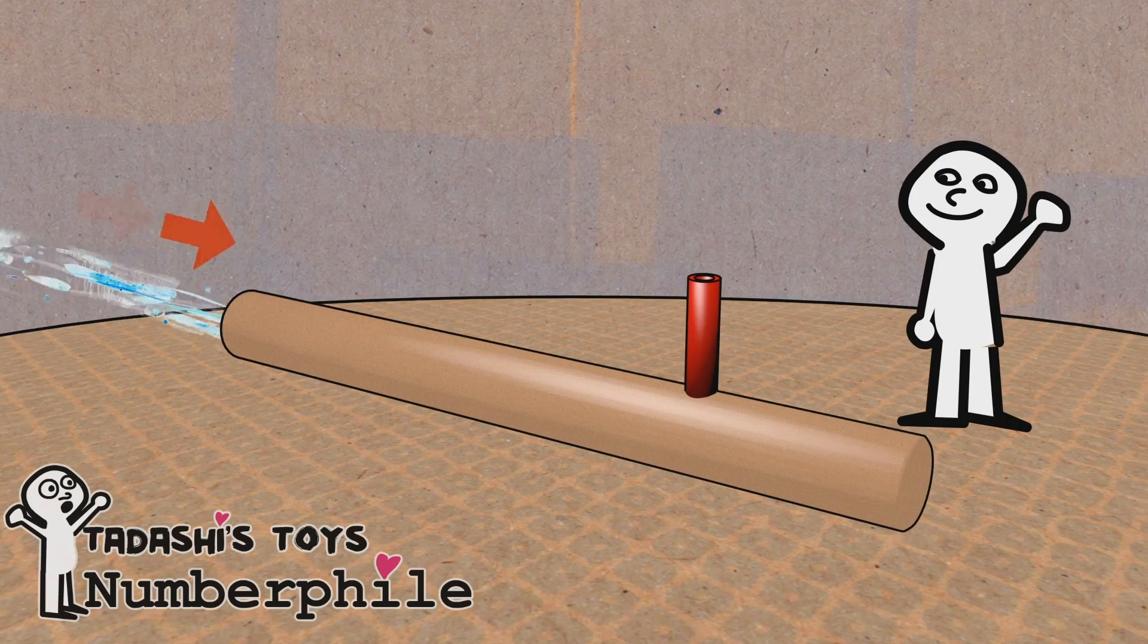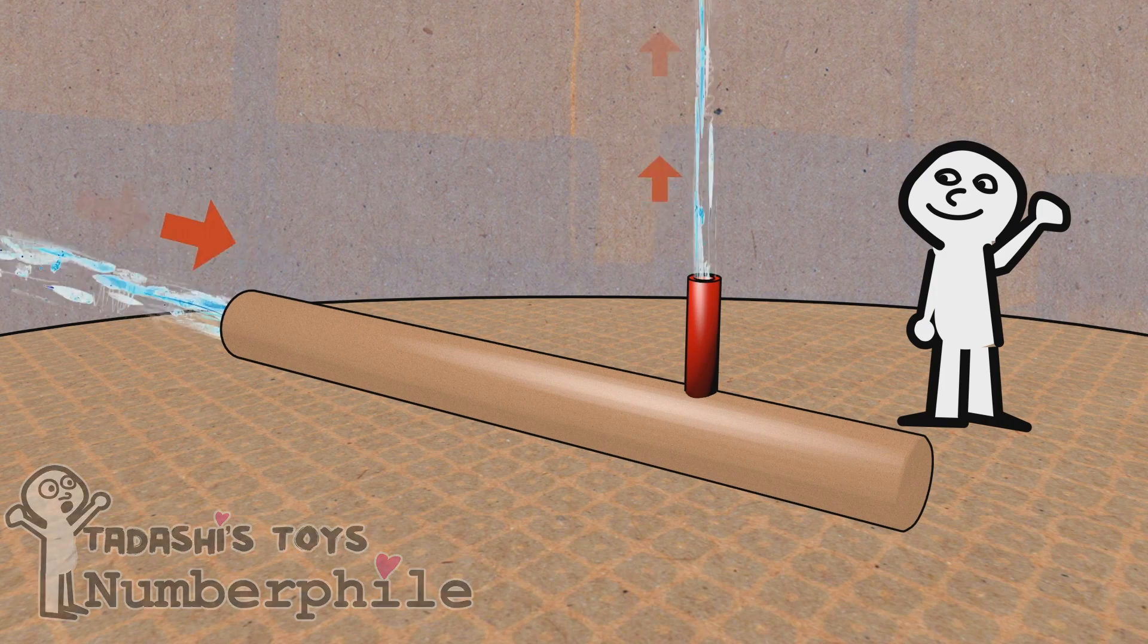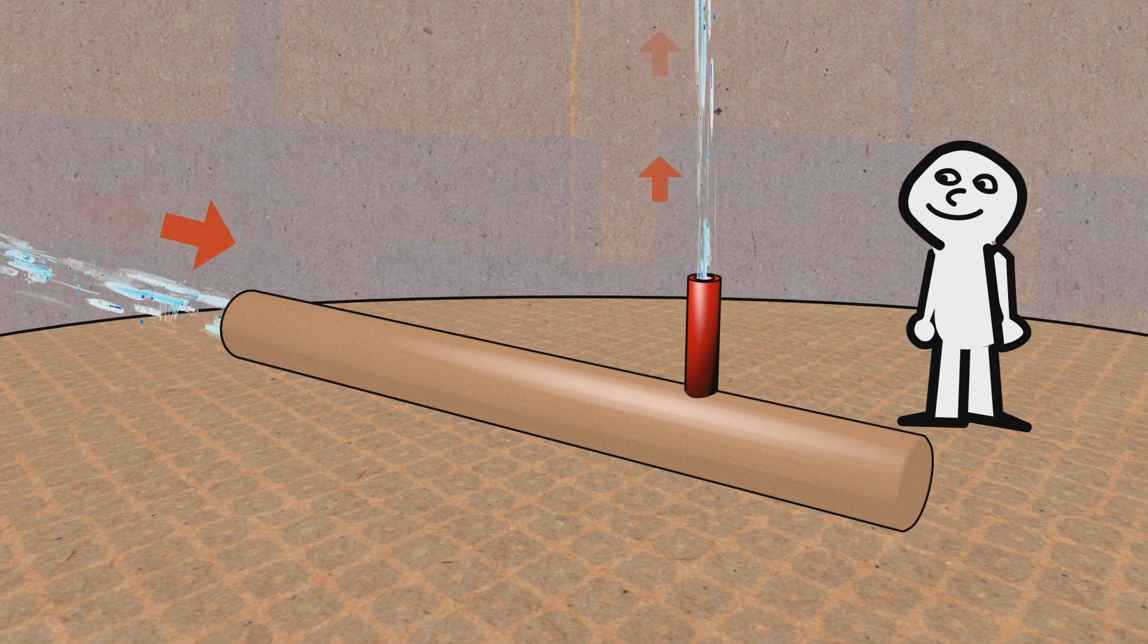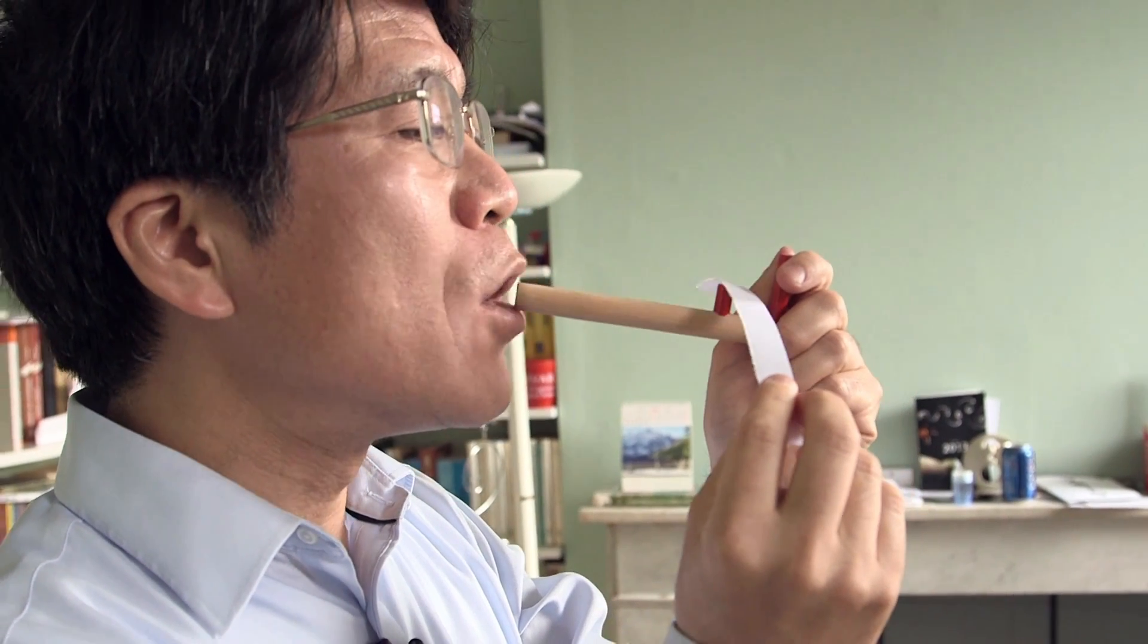I have here a pipe of sorts. I blow in air here and the air current comes out through the spout. Just so that you are convinced the air is coming out. Watch. The air is coming out.